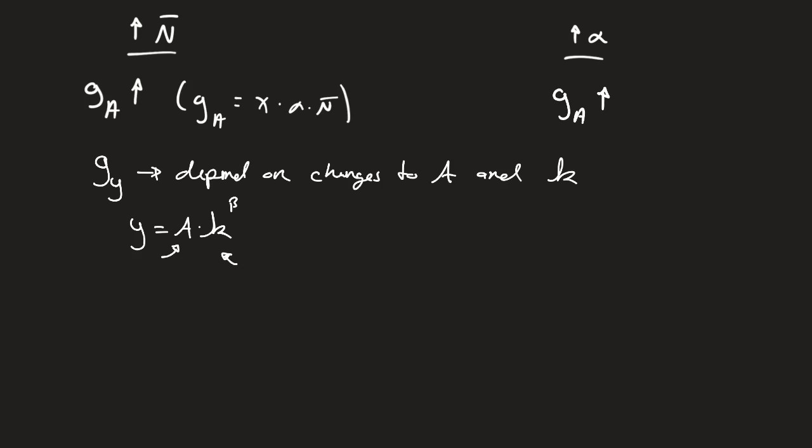We know about the growth rate of A, but what about the growth rate of capital? In the steady state, the growth rate of capital is going to be equal to zero. However, we might need to get to the steady state if we have a shock — which we will in both of these cases.